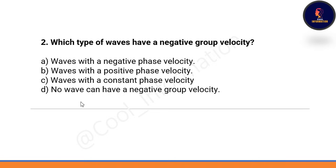Next question: which type of waves have a negative group velocity? Option A: waves with a negative phase velocity. Option B: waves with a positive group velocity. Option C: waves with a constant phase velocity. Option D: no waves can have a negative group velocity. Correct option is A — waves with a negative phase velocity also have a negative group velocity.